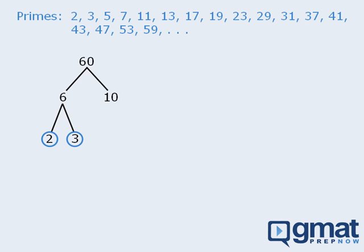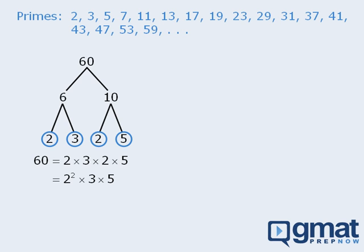Now, what about 10? Is 10 prime? 10 is not prime, so we can write 10 as the product of two numbers: 2 and 5. Since 2 and 5 are both prime, we'll circle them. We have now broken 60 down into several prime numbers, so 60 equals the product of the prime numbers found at the ends of the tree. We can write this as follows. This technique can be applied in several different ways, and it will always yield the same prime factorization.